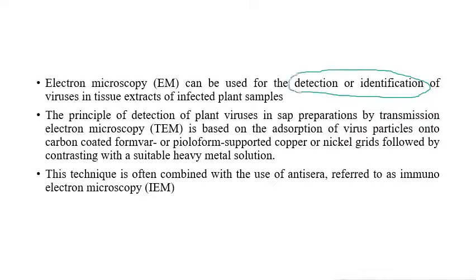Electron microscopy can be mainly used for the detection and identification of plant viruses from an infected leaf sample or plant sample. The main principle involved is that virus particles present in the sap are absorbed onto a carbon-coated formvar or pioloform supported copper or nickel grids — these grids are very important in electron microscopy.